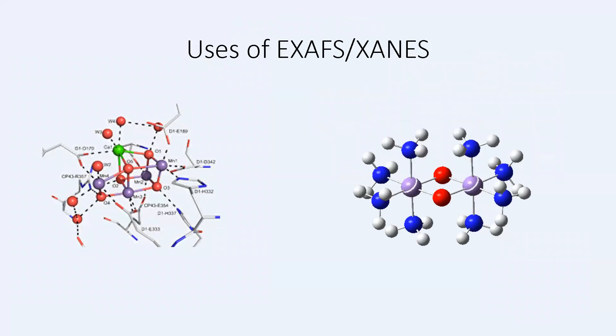The pre-edge region of an XAS spectrum depends on the electronic transitions to the empty bound state and contains information about the local geometry of the absorbing atom. As such, it depends on the absorbing atom's coordination and oxidation number. The edge region also depends on the oxidation state of the absorbing ion. The main edge shifts to higher energy as the oxidation number increases.